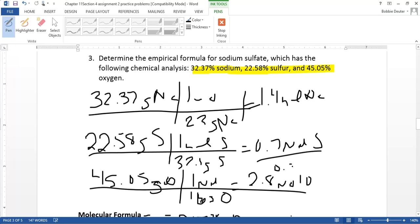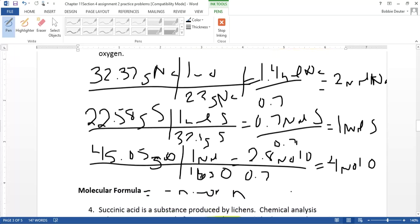0.7 would be the smallest. Dividing 0.7 by 0.7, 0.7 by 0.7, 0.7 by 0.7, we get one mole of sulfur, four moles of oxygen, and two moles of sodium. Because we're already in whole number form, we don't have to multiply by anything further. So we get Na is two, sulfur is one, and oxygen is four.